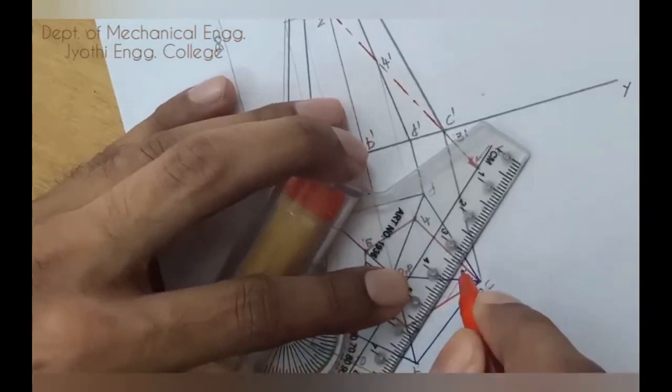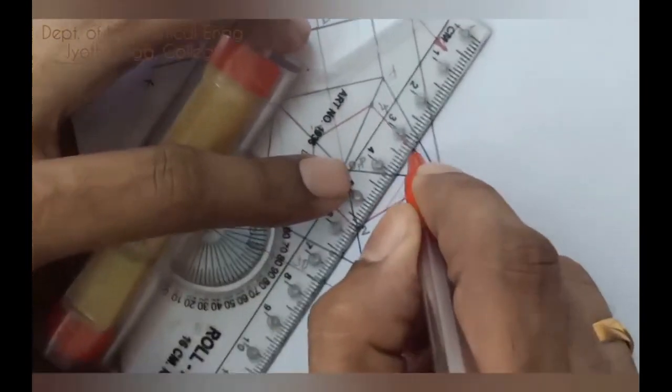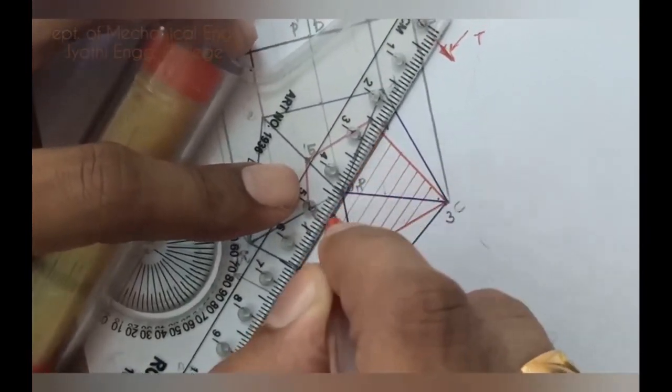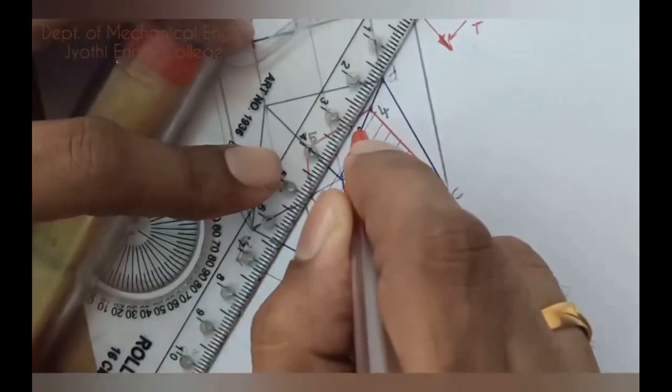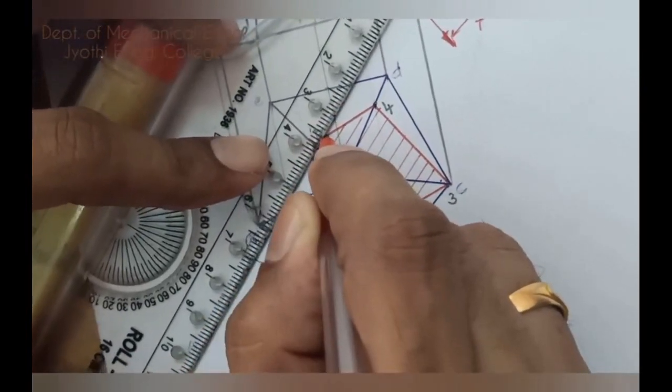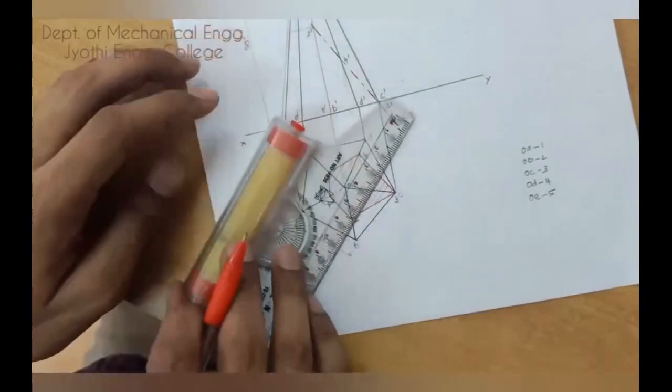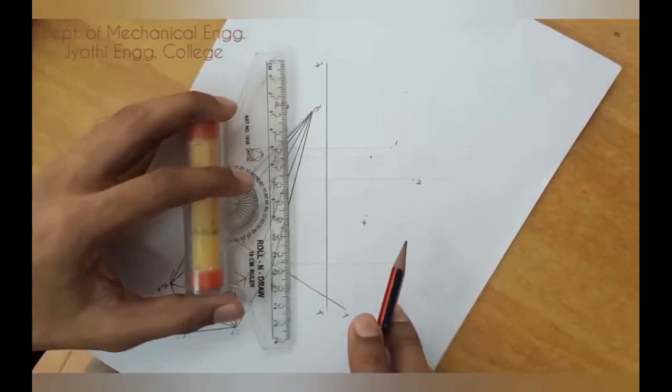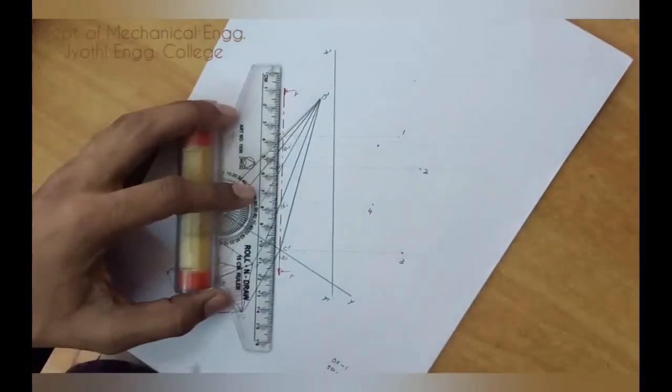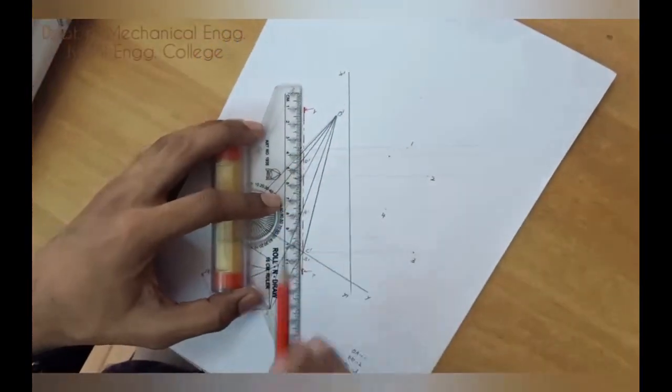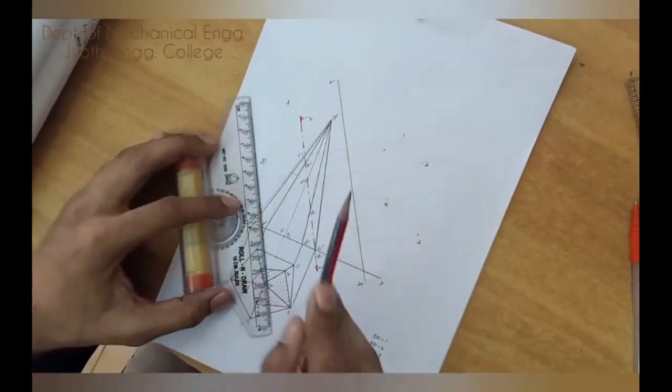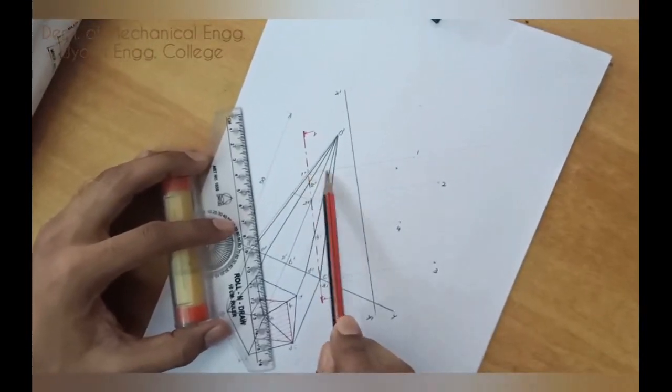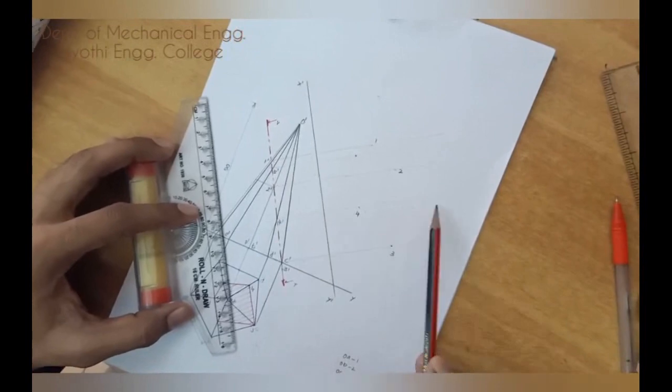Hatch in order to show the sectional view. Hatch the figure, 45 degree inclined. In order to get the true shape of the sectional view.